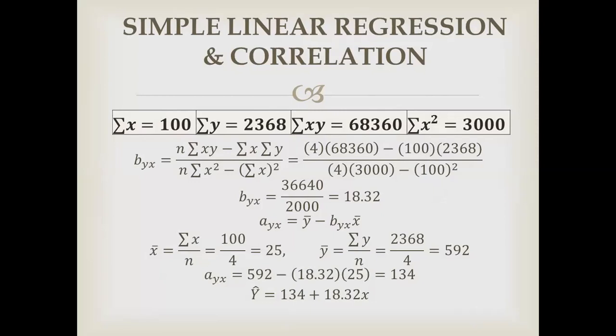We have calculated x-bar and y-bar because we need the intercept. x-bar is sum of x divided by 4 equals 25, and y-bar equals 2368 divided by 4 equals 592. Now we write these in the formula: 592 minus b which is 18.32, then x-bar is 25. The answer is 134.